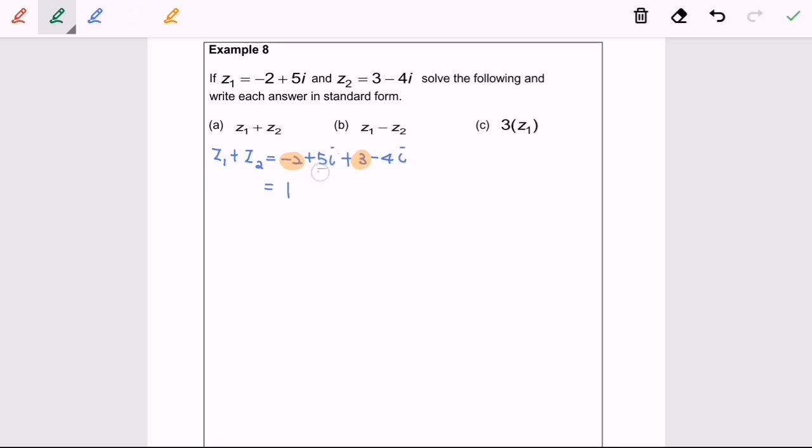Kindly refer to the imaginary part. 5 minus 4i and we will have 1i. So z sub 1 plus z sub 2 equals 1 plus i, which is a complex number.